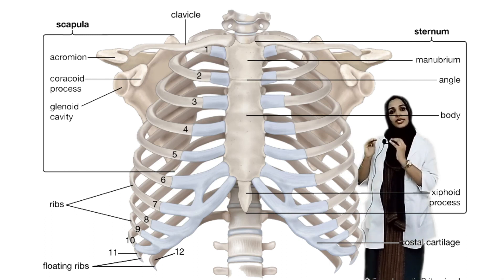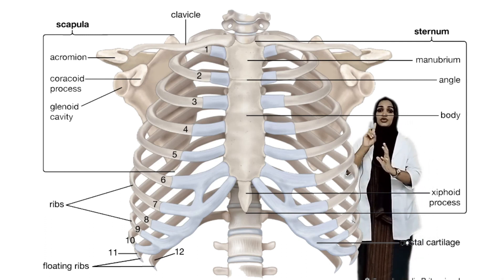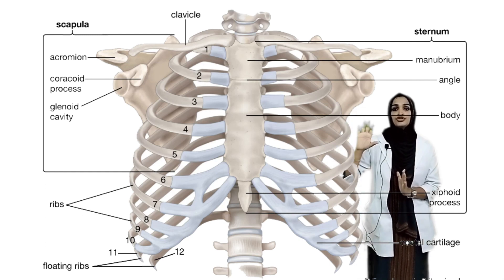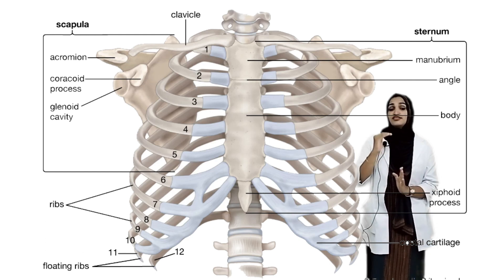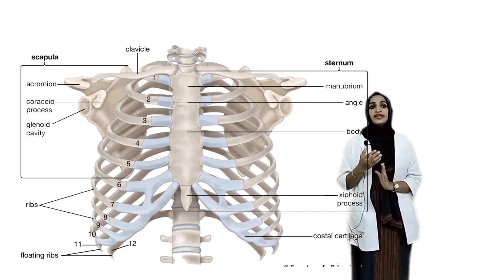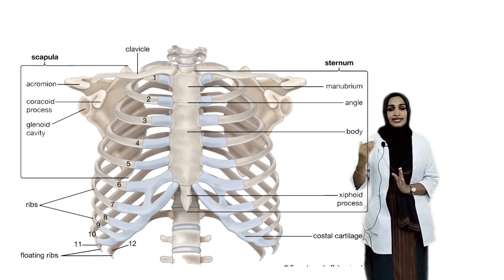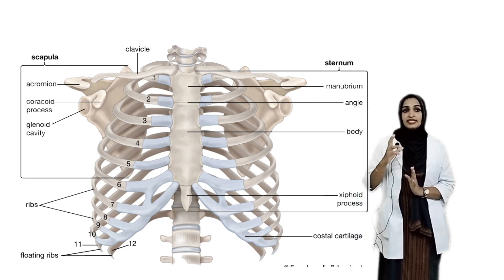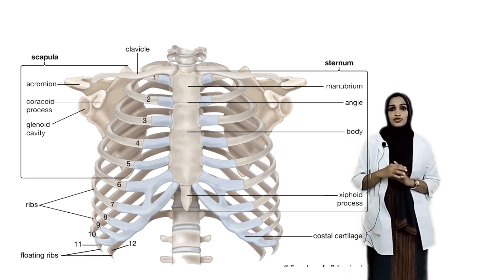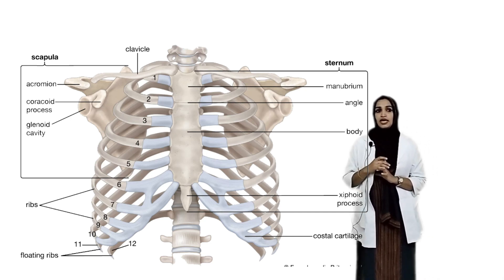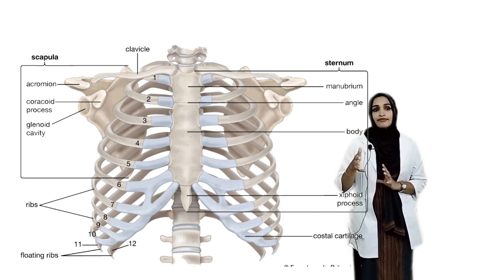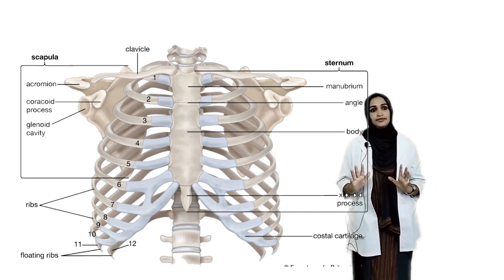The ribs have 12 pairs. The first seven ribs are known as true ribs because they are directly in contact with the sternum. The eighth, ninth and tenth ribs are the false ribs, which are indirectly connected to the sternum. The last two — the eleventh and twelfth — are floating ribs, which are not attached to the sternum.